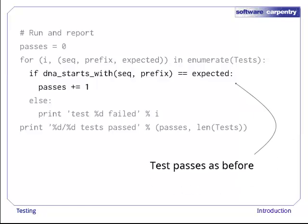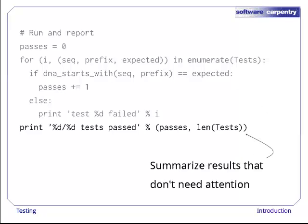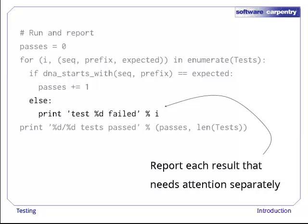The two lines that called DNA starts with, check its result, and increment the counter of successful tests are exactly the same as before. So is the line after the loop that summarizes how many tests passed. But these two lines are new. If a test fails, we immediately print out its index to make it easy to find in the tests table.